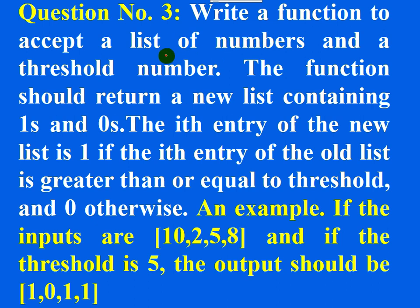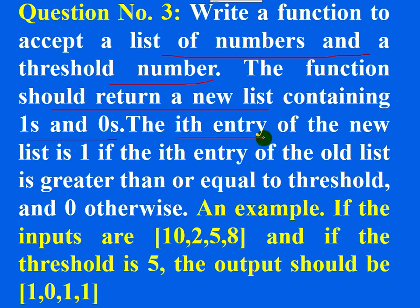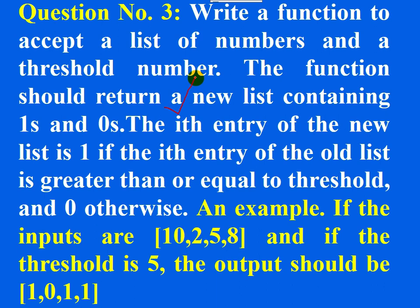Write a function to accept a list of numbers and a threshold number. The function should return a new list containing ones and zeros. The i-th entry of the new list is one if the i-th entry of the old list is greater than or equal to the threshold number, and zero otherwise.